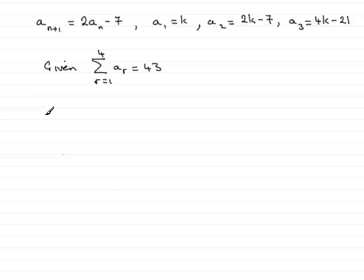So if we're given this result, what we can say is that therefore the first term plus the second term plus the third term and the fourth term is going to come to 43.